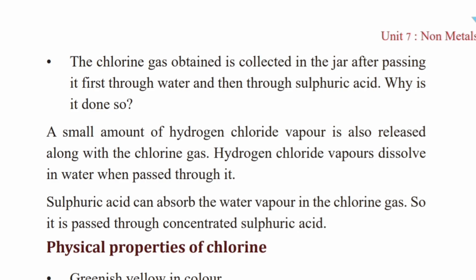Hydrogen chloride vapors dissolve in water when passed through it. Hydrogen chloride gas is dissolved in water. Concentrated sulfuric acid can absorb the water vapor in chlorine gas, so the chlorine gas is dehydrated.